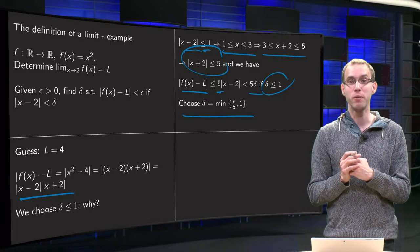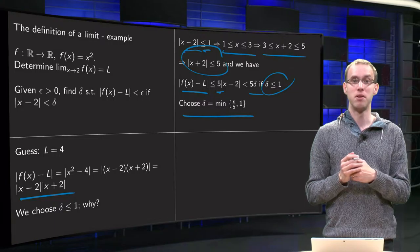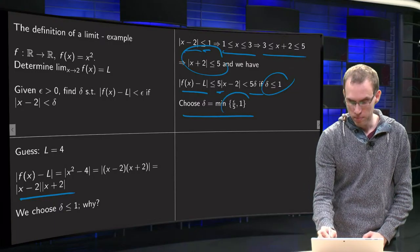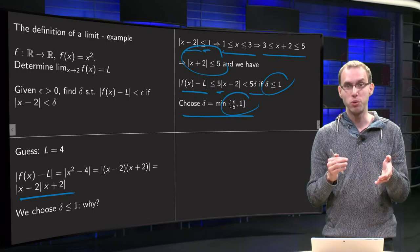And if someone gives you an epsilon of say 0.5, then we choose the minimum of those two, 0.5 over 5 equals 0.1 and 1, then we choose our delta to be 0.1.